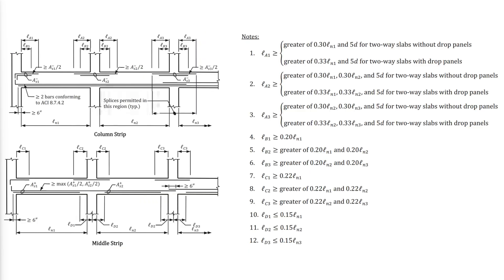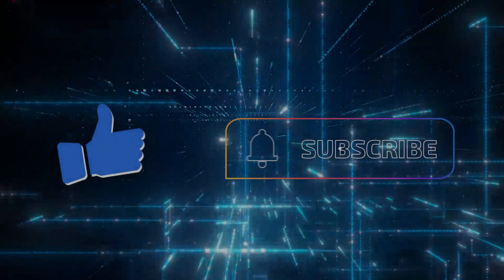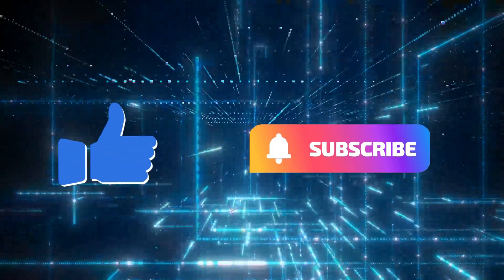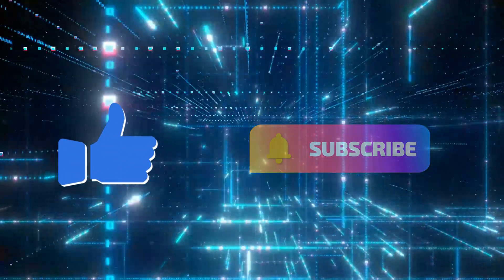The minimum bar lengths and continuity requirements for two-way slabs without beams are shown and summarized in the following diagram. Don't forget to like, subscribe, and turn on the notification bell.